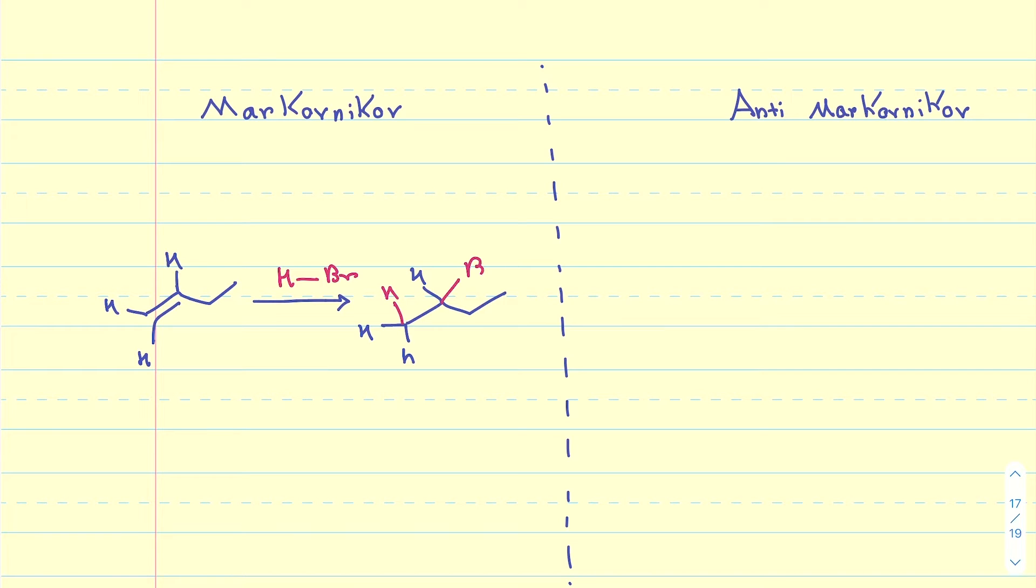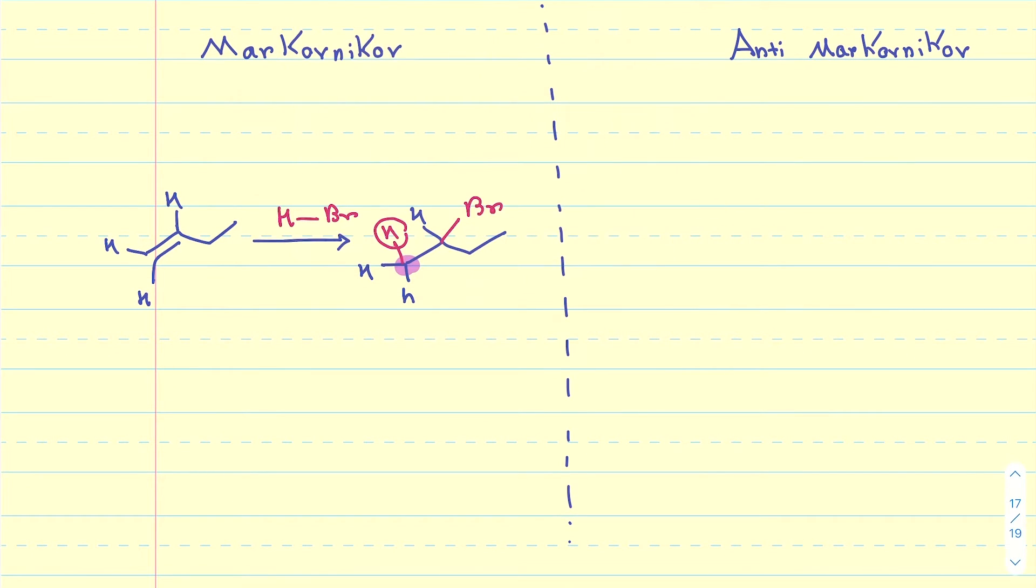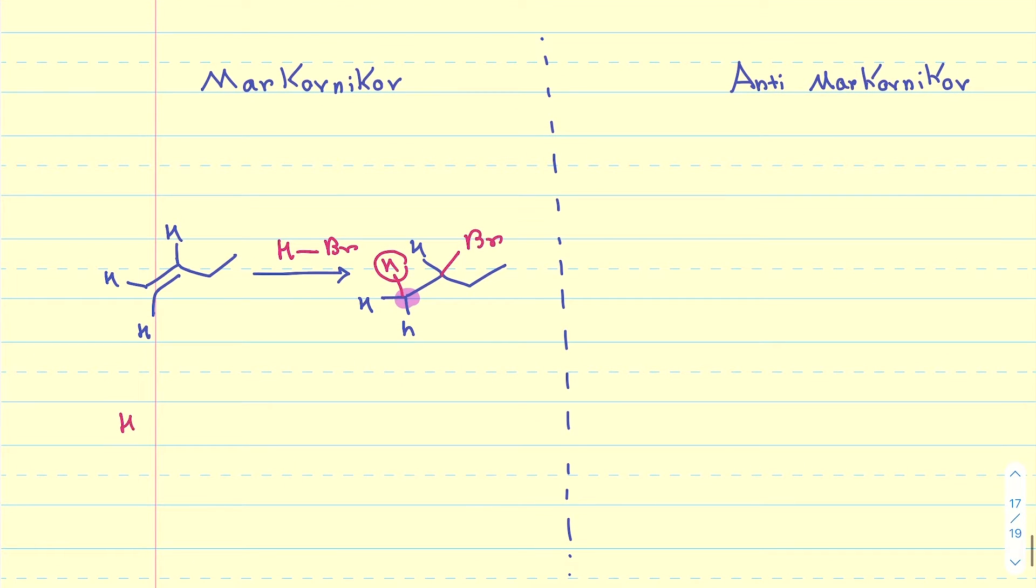This, we call the Markovnikov addition, where hydrogen adds to the carbon that already has more hydrogens on it. So, I'm going to write it like this: Hydrogen to the carbon with more hydrogens on it. That is going to be the Markovnikov addition.